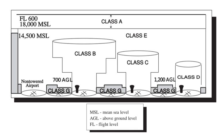Class F is not used in the United States. In Canada, Class F is the equivalent of U.S. special-use airspace, including restricted and alert areas. ICAO defines Class F as a 'hybrid' of Class E and Class G, in which ATC separation guidance is available but not required for IFR operations.